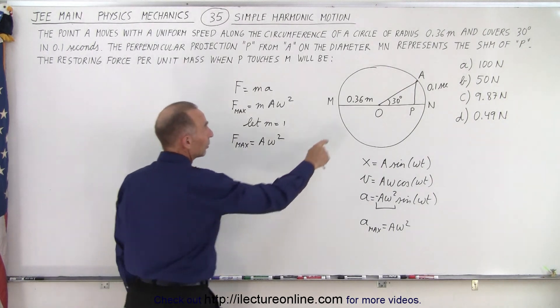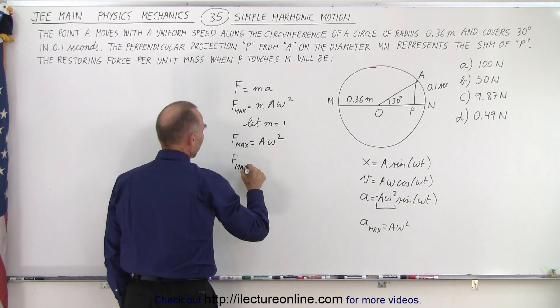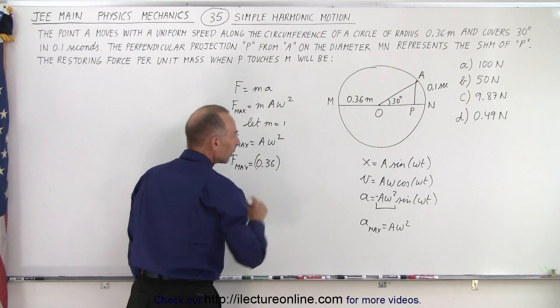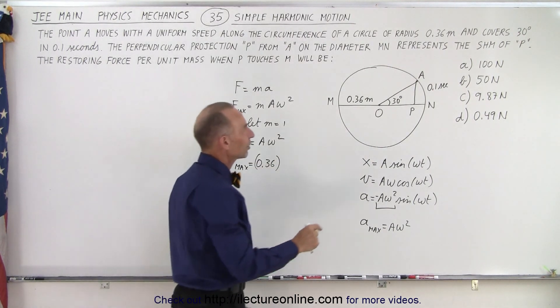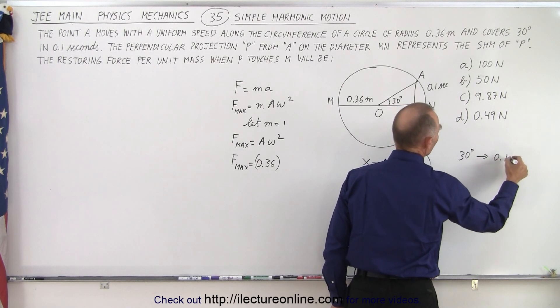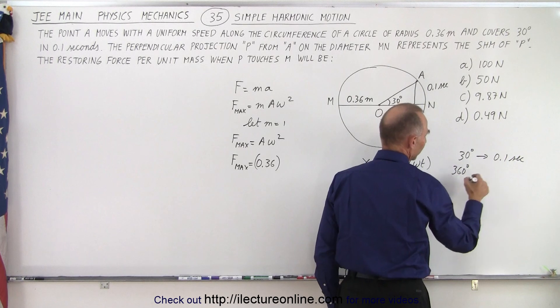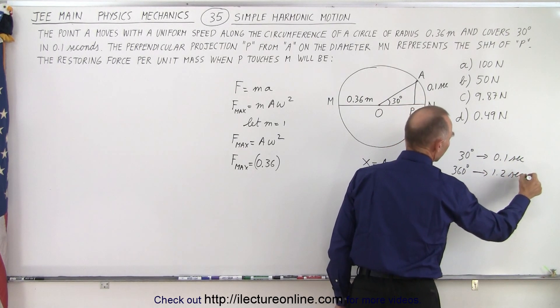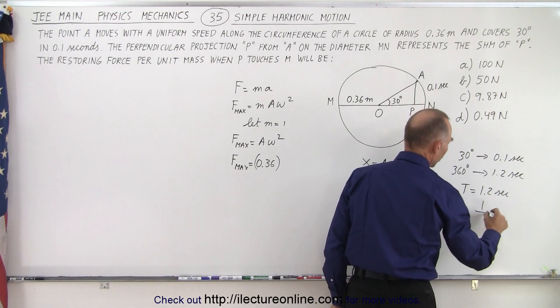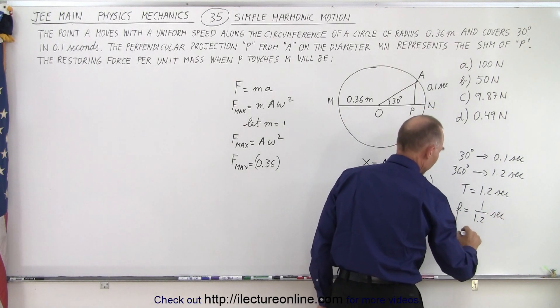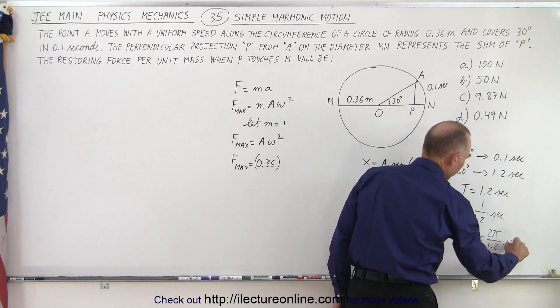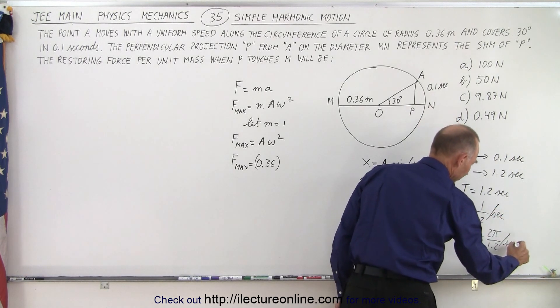Now, A we have, that's equal to 0.36. So F max is going to be equal to 0.36. That's a terrible looking three, six right there. But what about Omega? Well, notice that if it covers 30 degrees in 0.1 seconds, so we can say that 30 degrees in 0.1 seconds, then 360 degrees, which is 12 times as much, will be covered in 1.2 seconds, which means the period equals 1.2 seconds, which means that the frequency is equal to 1 over 1.2 seconds, and that Omega, which is equal to 2 pi F, which will be 2 pi divided by 1.2, and that would be per second.